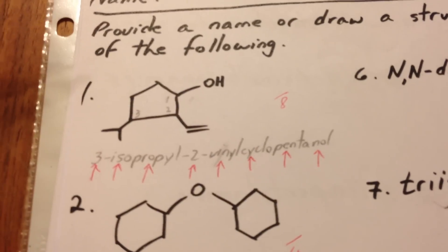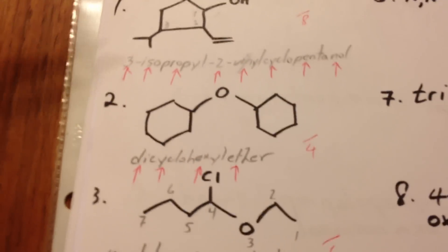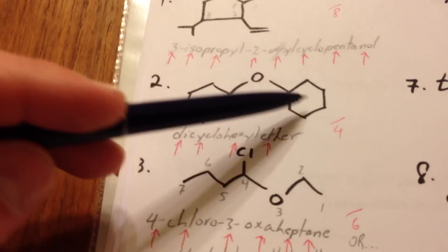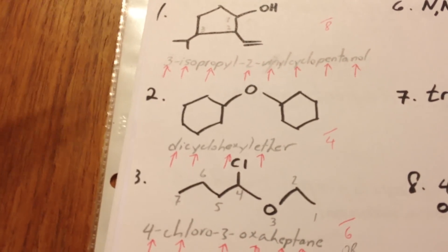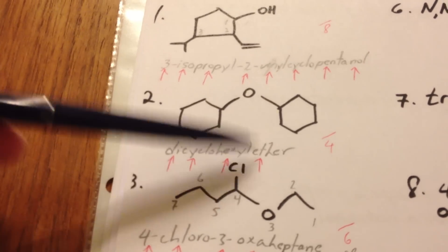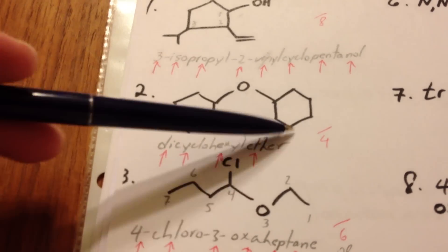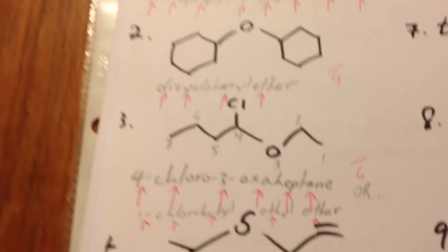That question is worth 8 marks. In this one we have an ether with 2 cyclohexyl groups, so we would call this dicyclohexyl ether. 4 marks are awarded for that question.